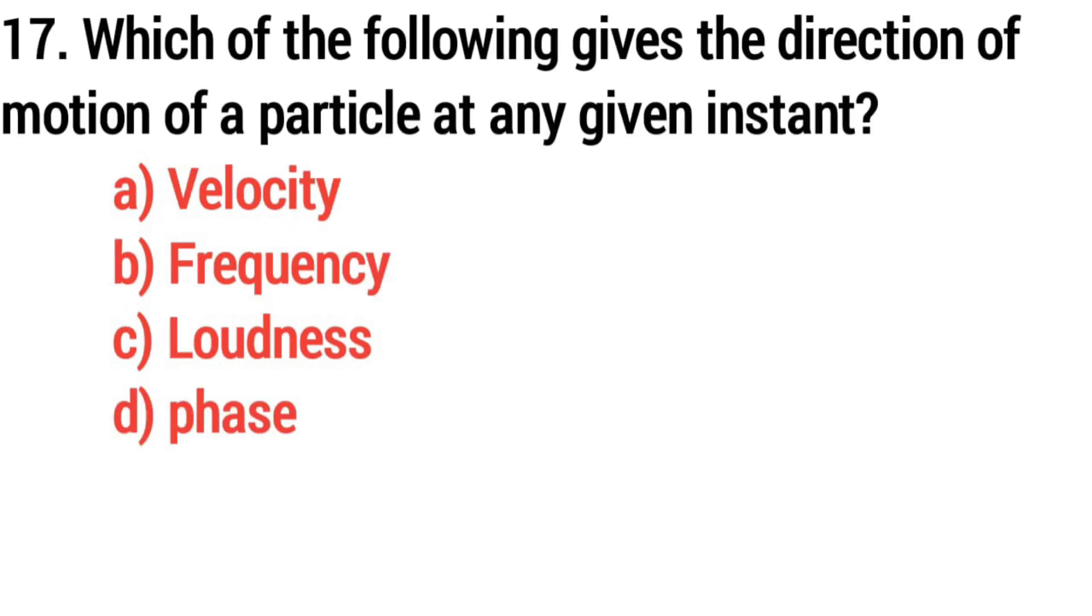Question 17. Which of the flowing gives the direction of motion of a particle at any given instant? Answer, Option A, Velocity.